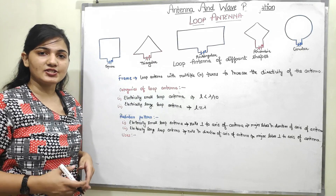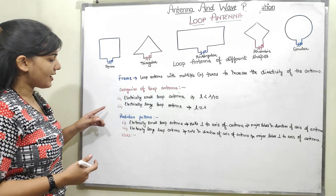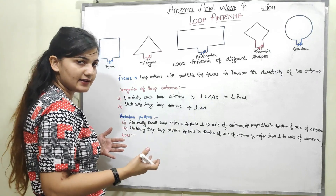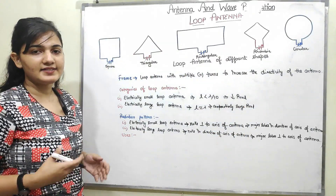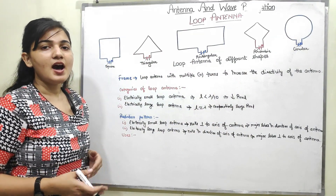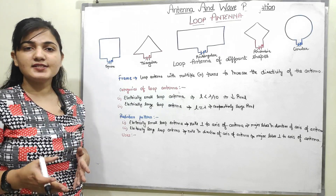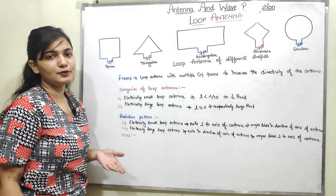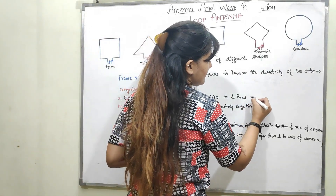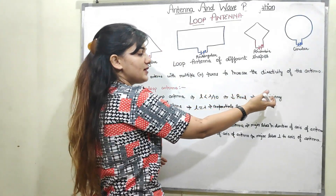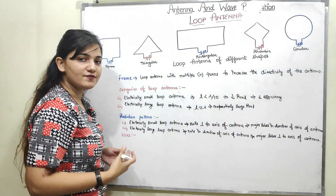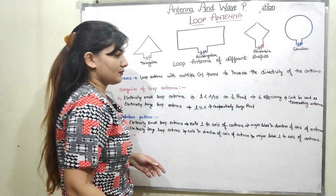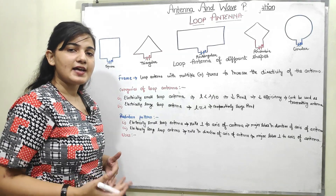The radiation resistance of an electrically small loop antenna is very less, whereas for an electrically large loop, the radiation resistance is comparatively large. Since loss resistance and radiation resistance are the determining factors for antenna efficiency, the electrically small loop antenna has very less efficiency because its radiation resistance is very small compared to the loss resistance. Therefore, it cannot be used as a transmitting antenna, as efficiency is an important factor for transmission. Generally, loop antennas are not used as transmitting antennas.